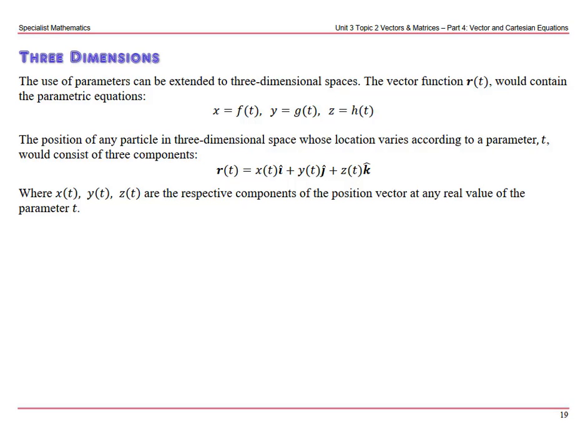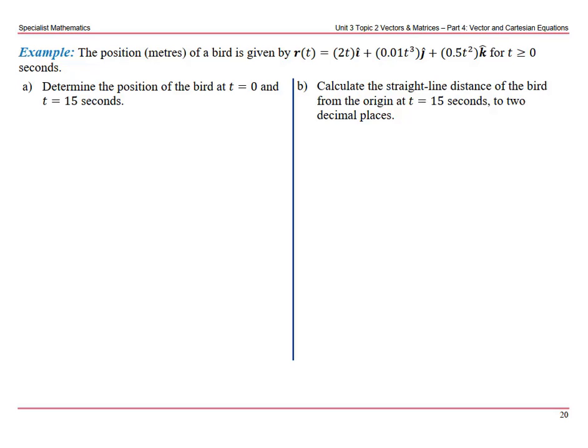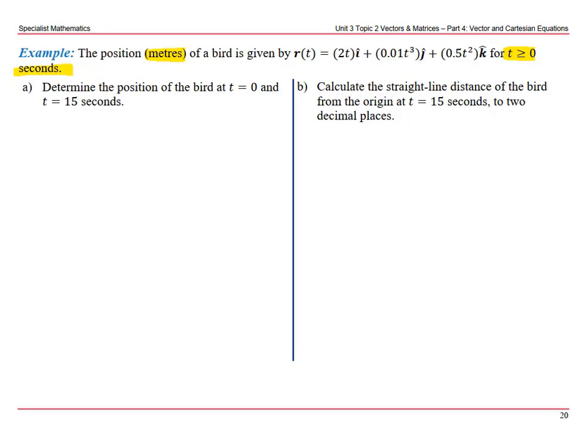So let's look at an example. The position in meters of a bird is given by this vector equation in three dimensions, for t is greater than or equal to zero seconds. Determine the position of the bird at t equals zero and t equals 15 seconds.